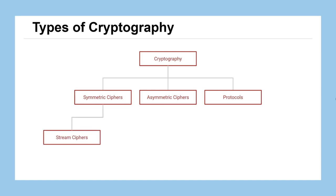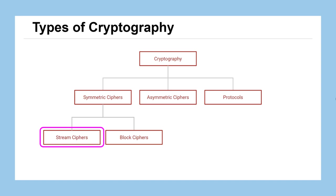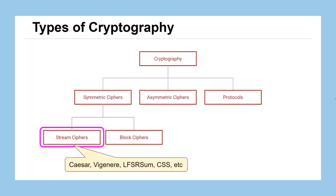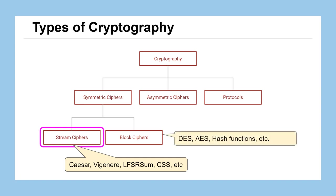We've mostly focused on symmetric ciphers, which can be broken down into two different categories: stream ciphers and block ciphers. Stream ciphers is what we've been focusing on in the past. These include examples such as Caesar cipher, Vigenère cipher, and our more recent examples, the LFSR sum cipher, CSS, and others. What we'll start today with this lesson is focusing more on block ciphers.